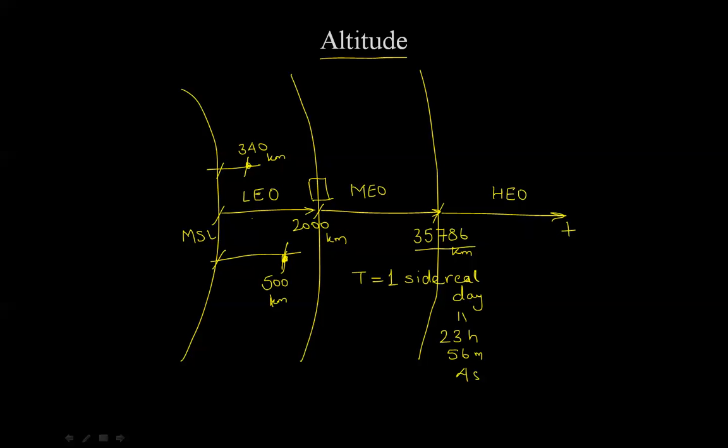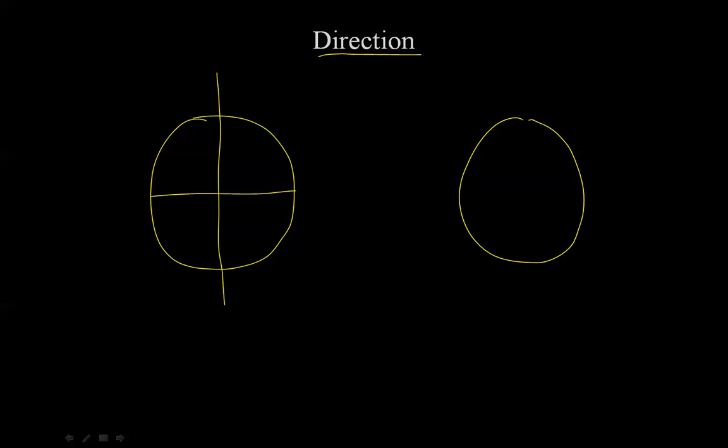The next classification is by direction, and this is an interesting one. Let's see why. If this here is the Earth, and I'm going to draw the equator and the north-south axis, and I'm going to draw another Earth over here with the same thing, the equator and the north-south axis.